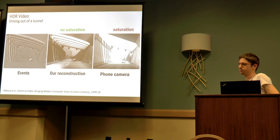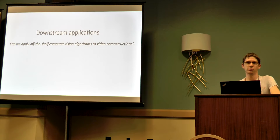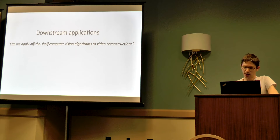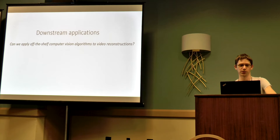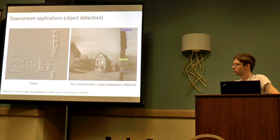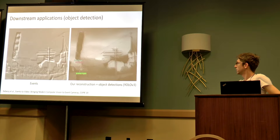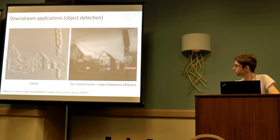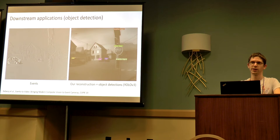Now that we have a system that can reconstruct high-quality videos from events, what can we do with it? In the paper we're presenting this week at CVPR, we explored several options. One thing we thought about was: can we use off-the-shelf computer vision on these reconstructions? Here is an object detection example. On the right side you have our reconstruction from events only, plus YOLO object detector running. Out of the box, without needing to train on event data, you get very high quality labels — you could use this to generate labeling data for purely event-based processing.